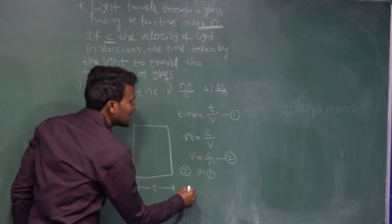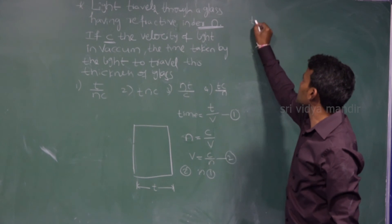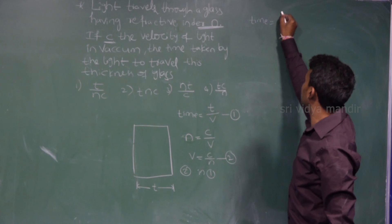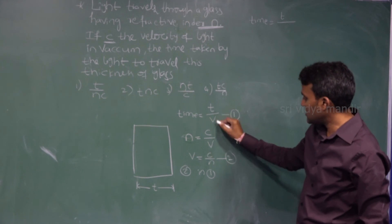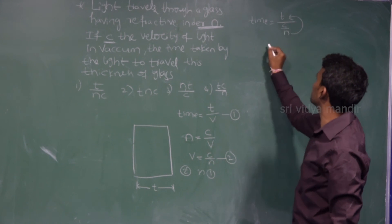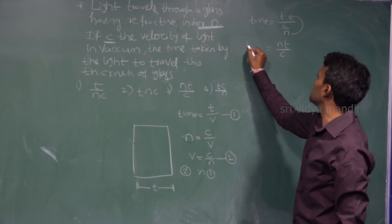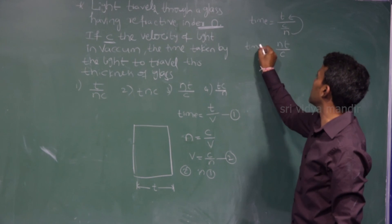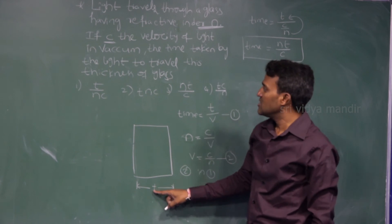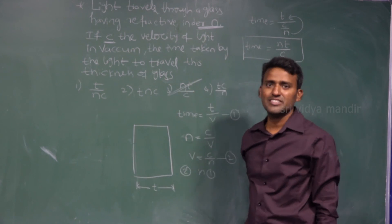Substituting: time equals thickness T divided by V, and V equals C divided by N. So N goes to the numerator, giving time equals NT divided by C. The time taken by light to travel through thickness T of glass is NT/C, which is Option 3.